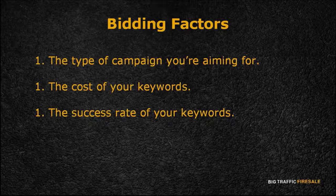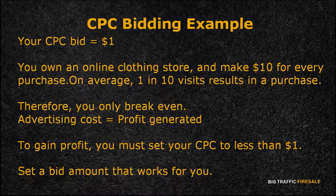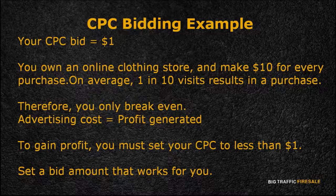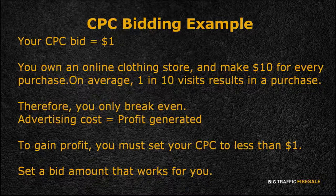For example, let's say you've set your CPC bid to $1. You own an online clothing line shop, you make $10 from every purchase, and on average 1 in 10 visits results in a purchase. As a result, you only break even, as your advertising cost is equal to the profit you generate. Therefore, to gain profit your CPC should cost you less than a dollar — choose a bid amount that works for you in the campaign that you're aiming for.